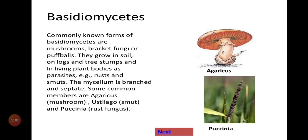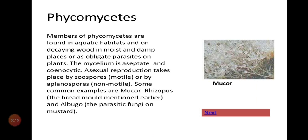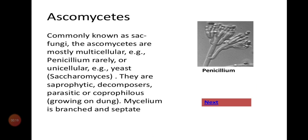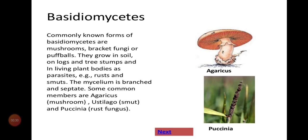Welcome back children. We will see basidiomycetes. Last video we discussed about phycomycetes and ascomycetes. The sexual spores of phycomycetes are zygospores. The sexual spore of ascomycetes is ascospores — 8 spores produced inside the ascus. The next advanced form of fungi is basidiomycetes.